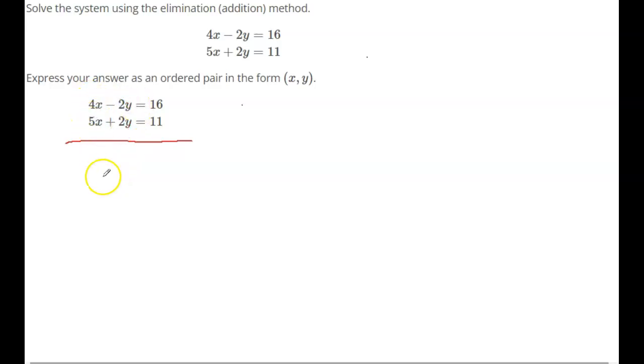So the 4 plus 5x gives me 9x. Negative 2y plus positive 2y is 0y. It's eliminated. There's 0 of them. So that was the goal. That's what we got. And then add the numbers over here, 27. Divide both sides here by 9 now, and you get what x is. x is 3.